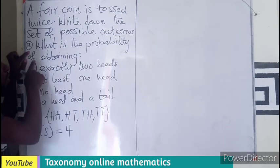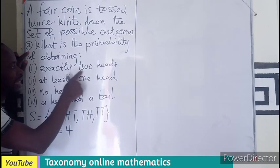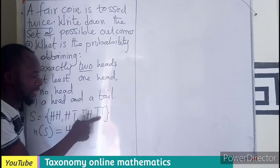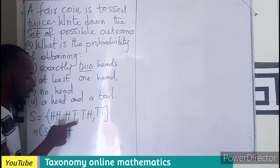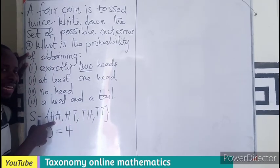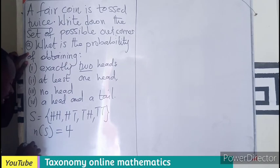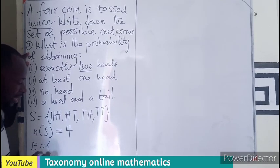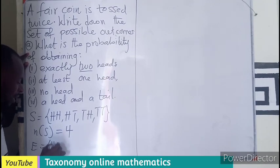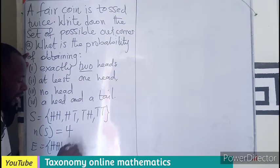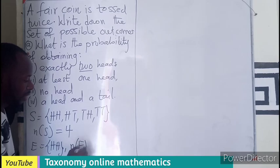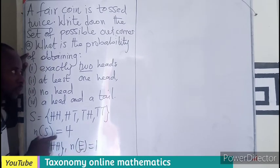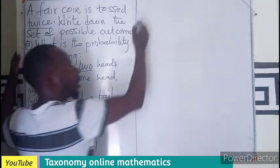We are now going to find the probability of: exactly two heads, no head, exactly one head, and one head and one tail. For exactly two heads, we let E equal the set of obtaining exactly two heads, which is just head and head. The number of elements in event E is 1.